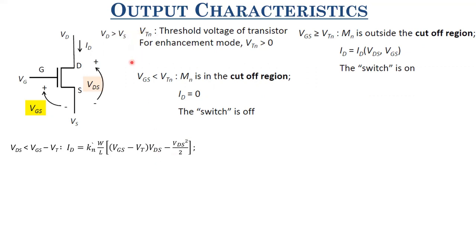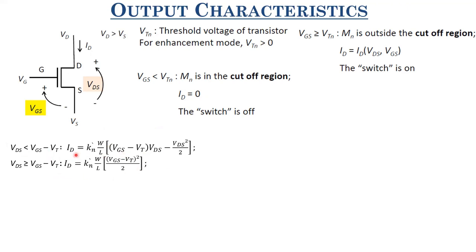Output characteristics are ID plotted as a function of VDS. When VDS ≥ VGS − VT, pinch-off occurs near the drain and current saturates: ID = KN'·(W/L)·(VGS − VT)²/2. Here the device acts like a current source; in linear region it acts like a resistor. It's not an ideal current source — channel length modulation due to pinch-off adds a term (1 + λ·VDS), where KN = KN'·W/L is the gain factor.